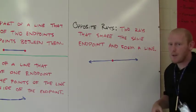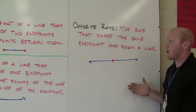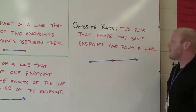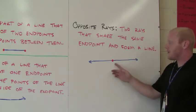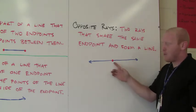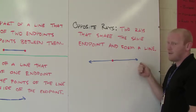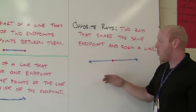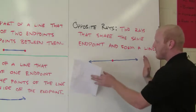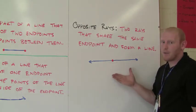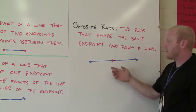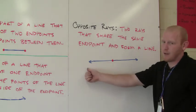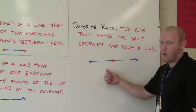Our final term in this video is opposite rays. What are opposite rays? Two rays that share the same endpoint and form a line. As you see here, I have my endpoint. Starting in this direction I have one ray, and going in the opposite direction I have another ray. When I combine these two, I get a line. So these are opposite rays — two rays that share the same endpoint and go forever in opposite directions to form one line.